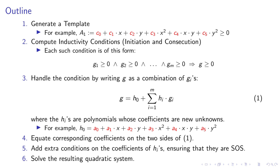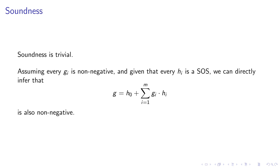Now let's talk about soundness, completeness, and complexity. Soundness is trivial: we write each polynomial g as a combination of sum of squares and the polynomials gi. If every gi is non-negative, and every hi is sum of squares and therefore non-negative, then g is also going to be non-negative. So soundness is very easy.